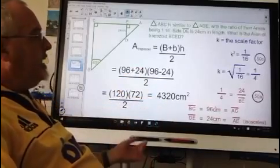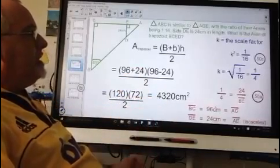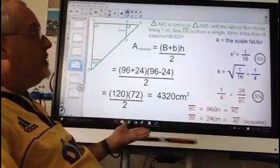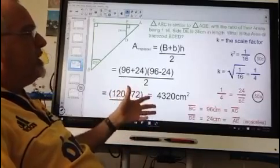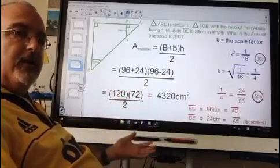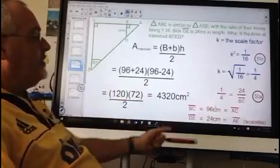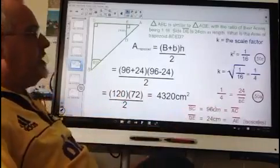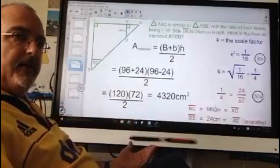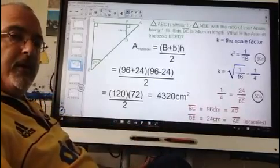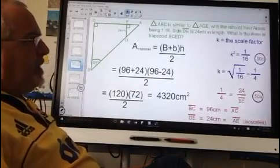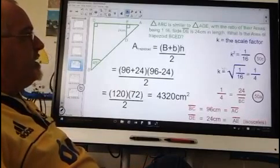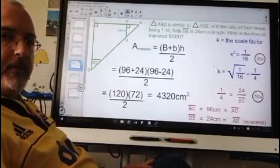Because the logic of the marking scheme is, in order to start earning marks on this question, the student has to use the concept of similarity to find values that are necessary to solve the problem. That 24 centimeter side AE can be seen as necessary to solve the problem, but it was not found using the concept of similarity. So this blue part is crucial. And that is what the student has to focus on when they're preparing for the exam in this course.